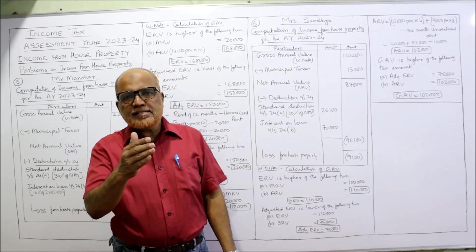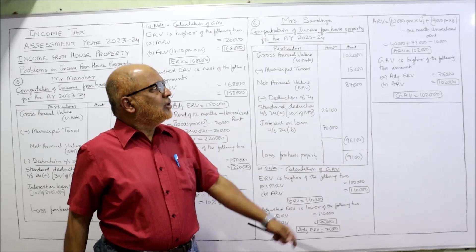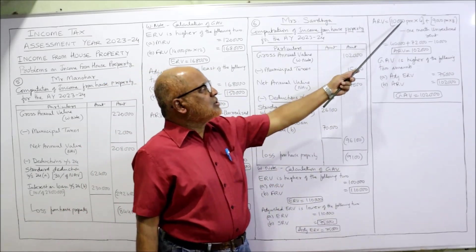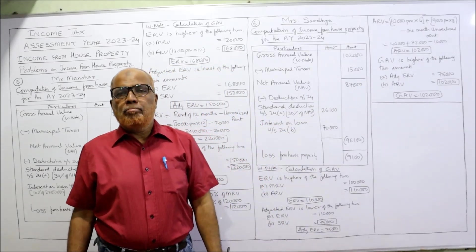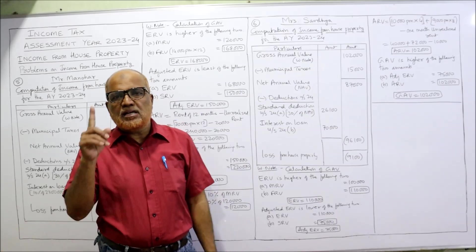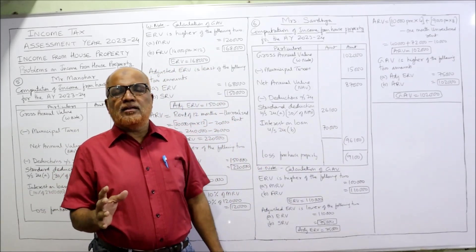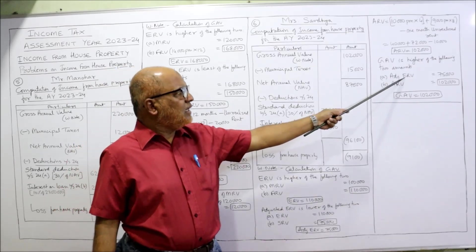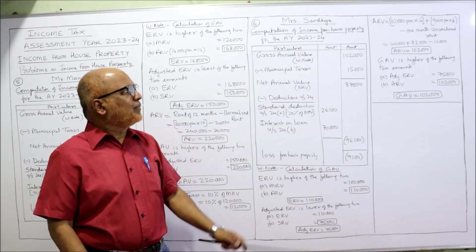Now we calculate ARV. First four months the tenant is Mrs. Devi at 10,000 per month, and next eight months the tenant is Mrs. Shanti at 9,000 per month. So: 10,000 into 4 equals 40,000, plus 9,000 into 8 equals 72,000, total 1,12,000. Minus one month unrealized rent of 10,000. ARV is 1,02,000. GAV is the higher of adjusted ERV (75,000) or ARV (1,02,000) — higher is 1,02,000, so GAV is 1,02,000.